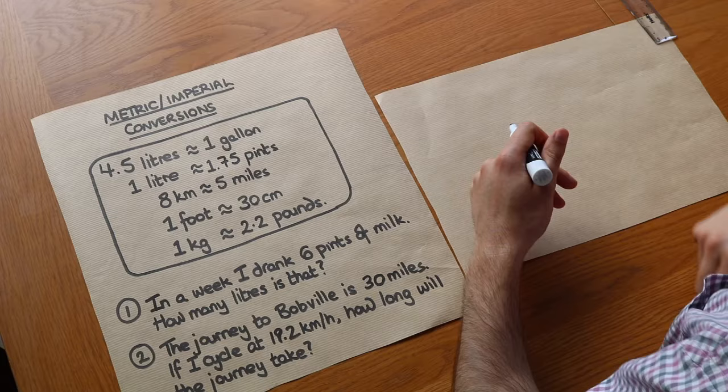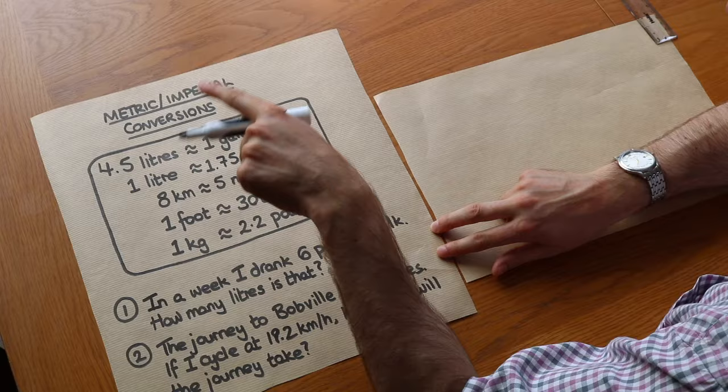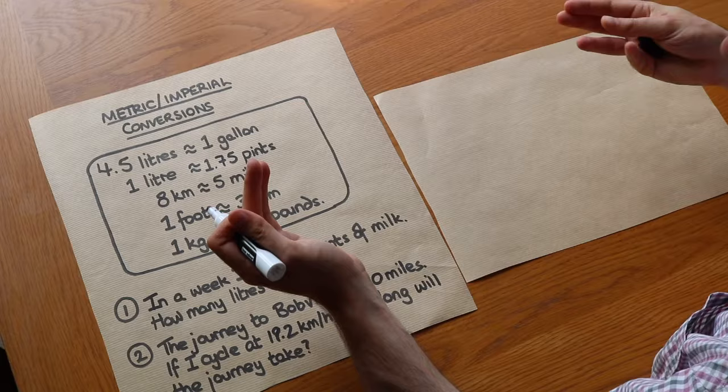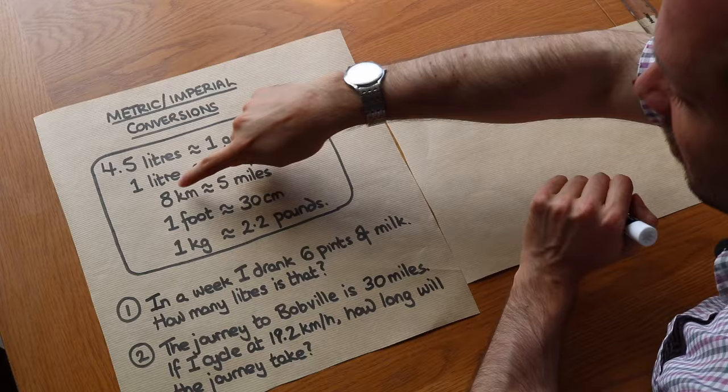For example, 1 foot is equal to 12 inches. Now I should note that you're no longer required in the GCSE syllabus to memorise these particular conversions between metric and imperial, and you certainly don't need to know imperial to imperial, like 1 foot is 12 inches.